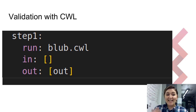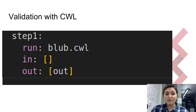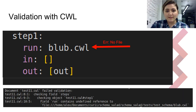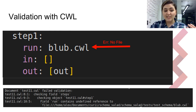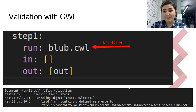Let's talk about validation with CWL. Say you're writing a CWL workflow and your first step is supposed to run another workflow you created in your directory called blub.cwl. You think everything's fine, however when you try to run it you get an error — turns out blub.cwl doesn't actually exist. Luckily there are tools for validating CWL objects. Here's an example: this CWL workflow failed validation because step.1 contains an undefined reference to blub.cwl, so the file is not valid.